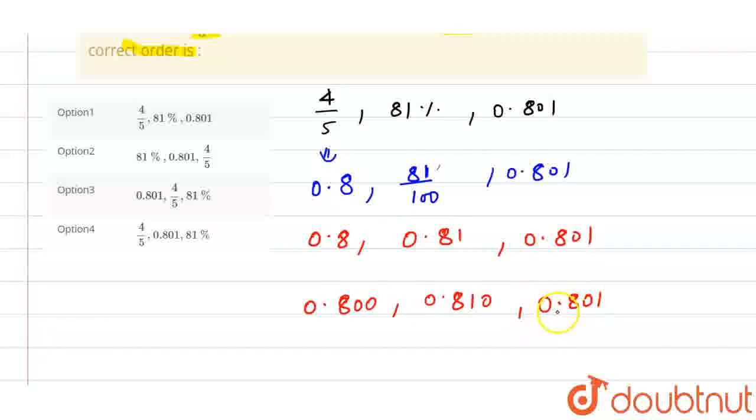Now we will compare. Looking at these values starting from zero, we can see 800, 801, and 810. So comparing these: first will be 800, second will be 801, and third will be 810.